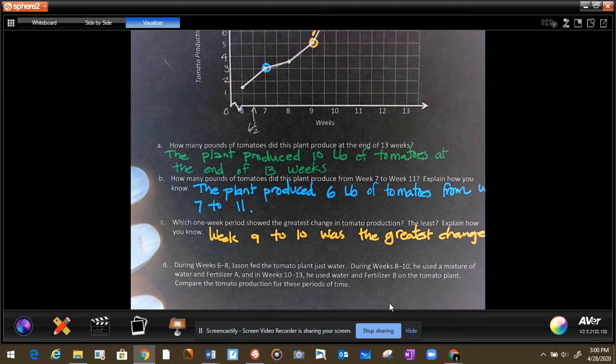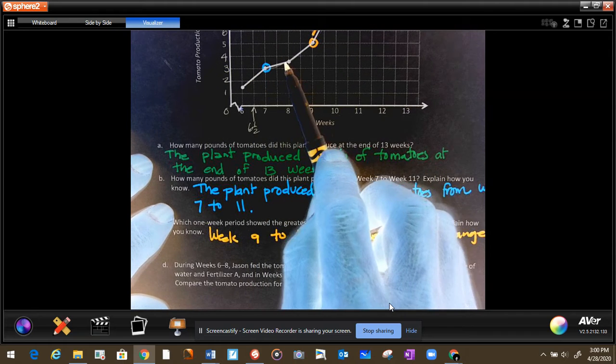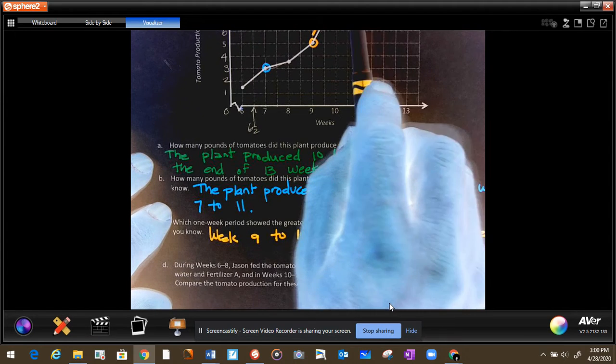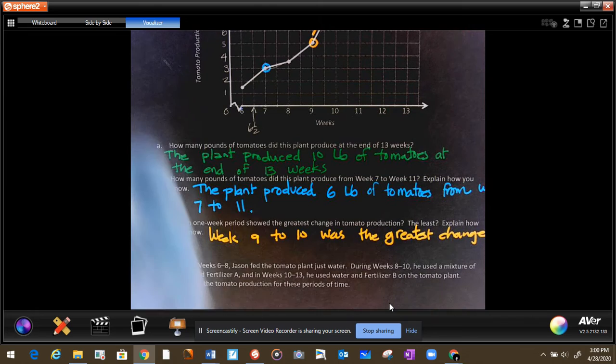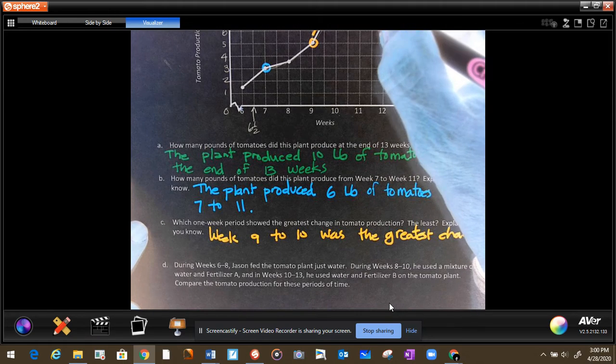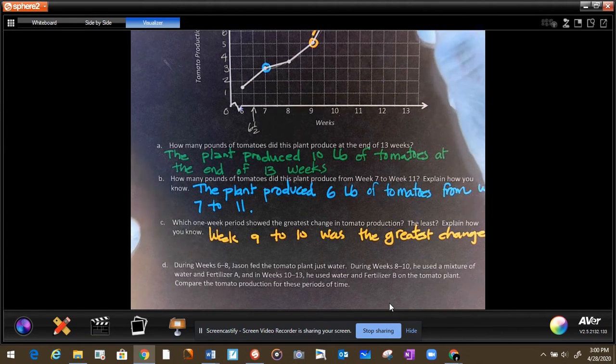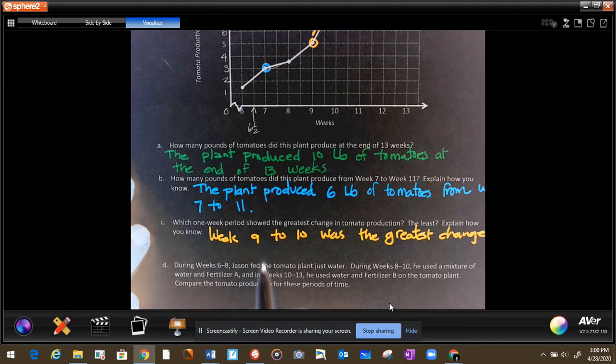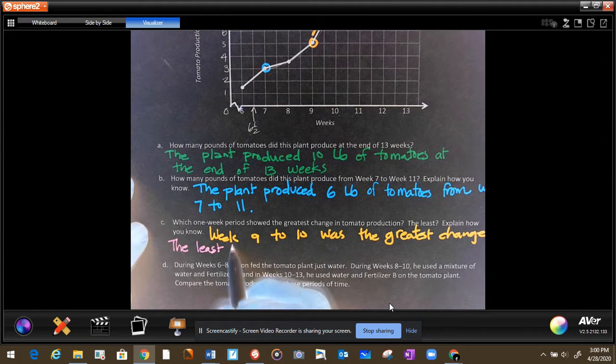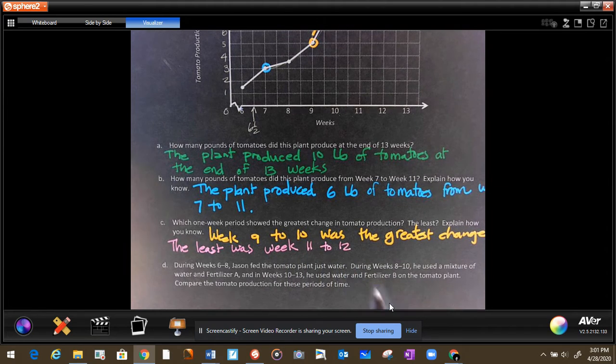The least was... let's look at which one was the least. The least is the one that should look almost flat. This one moved up, this one is almost flat but not completely, this one moves up, this one produced a little more. Oh look at this one, this is flat right here. So that will be probably our answer. So from week, I'm going to circle this. What would that be? Week 11 and week 12. That's when the least production was. The least was week 11 to 12.